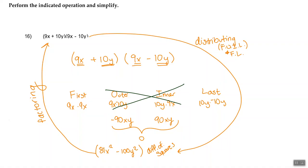So our answer is 81x squared minus 100y squared.